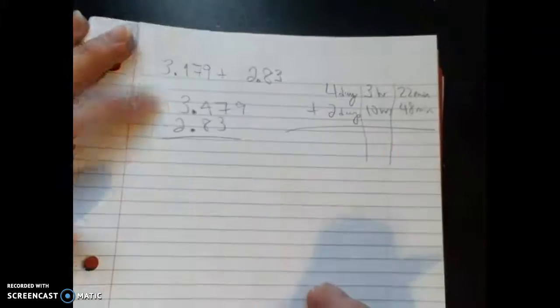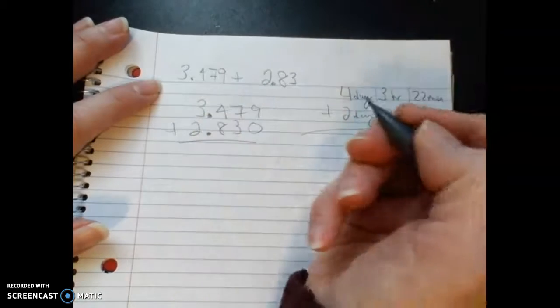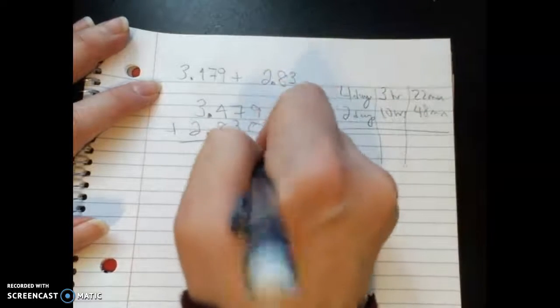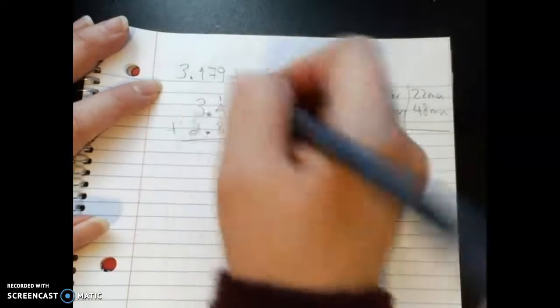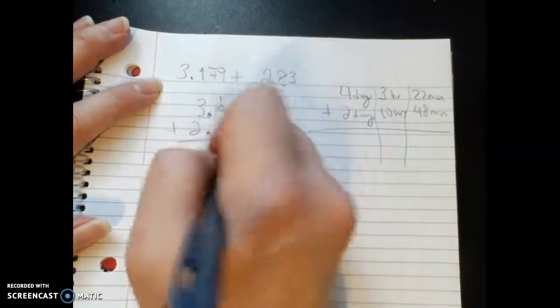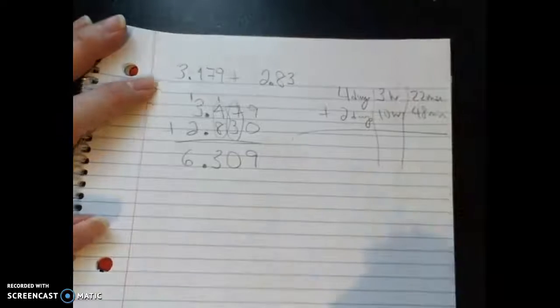If we do the traditional algorithm, sometimes teachers will say to put a zero there. You get 9, then 7 plus 3 is 10, so zero with regrouping. You get 12, then 13—again enough to regroup—and then you get 6.